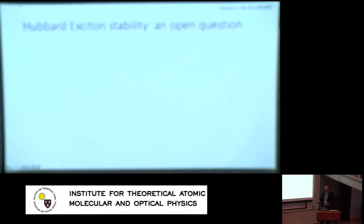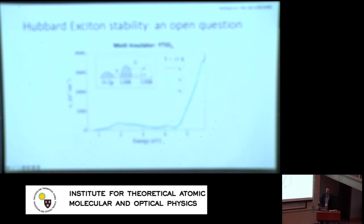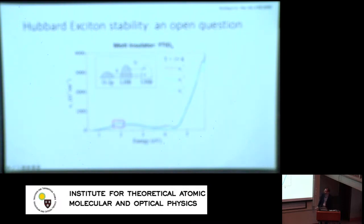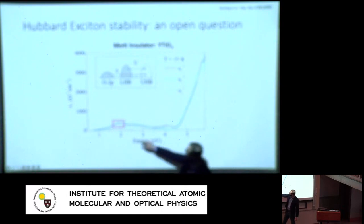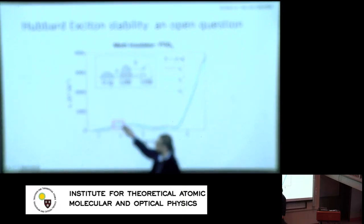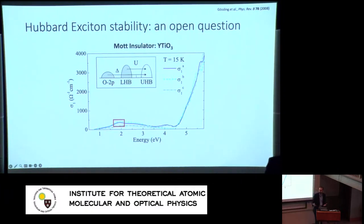Why are there still open questions about this — why haven't we studied these Hubbard excitons? One reason is that the stability of these pairs is still an open experimental question. In a paradigmatic Mott insulator like lanthanum titanate, unlike a semiconductor where you see sharp peaks below the band edge, what has been assigned to an excitonic origin is actually a very broad mode. It's very different from what you expect in semiconducting spectra. Most importantly, this mode overlaps with the continuum, which implies that the exciton is actually ephemeral — it's on top of the continuum and always unstable against decaying into the free carrier continuum.